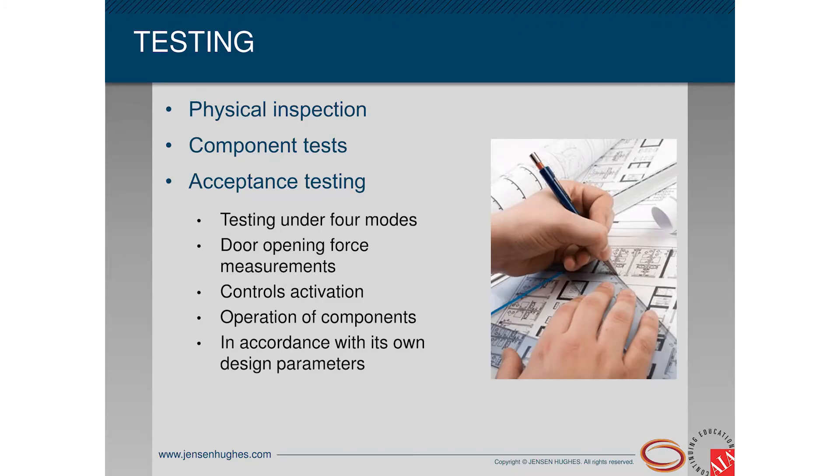Let's dive into the testing procedures required by NFPA 92. Some of these might be covered by the designer rather than the commissioning agent, but they all require AHJ witnessing or an AHJ to see the report confirming it was done correctly in most jurisdictions. First, before any component testing, you do a physical inspection — making sure the design is installed as required. This means checking that smoke barriers, walls, dampers, fans, partitions, and fire stopping are all in place. If this isn't complete, testing has to stop and they go back and fix it.